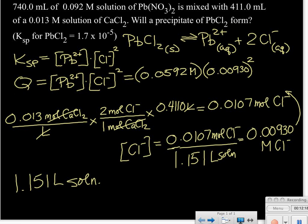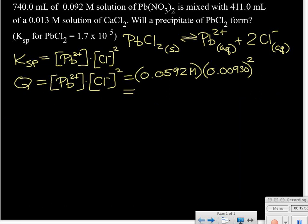We are calculating Q, which uses the same expression as Ksp but the system may not be at equilibrium. With our lead ion concentration of 0.0592 molar and chloride ion concentration of 0.00930 molar squared, we calculate Q. Our Q value equals 5.1 times 10 to the minus sixth. Now we compare Q to the Ksp value for lead(II) chloride.